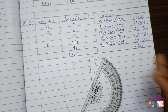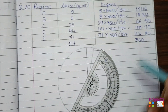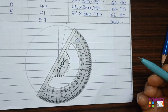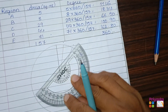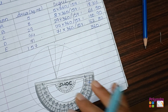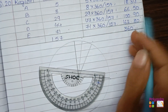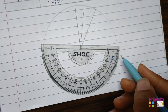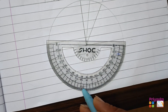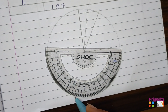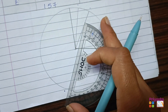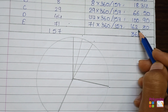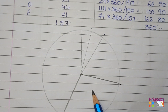Put the protractor at the center again. The next value is 66.50 degrees: find 65 and one more for 66.50, and draw the line. Then for 100.90 degrees, find 100 and a little more for the 0.90, and put a line. The last segment is 162.80 degrees, which completes the circle.